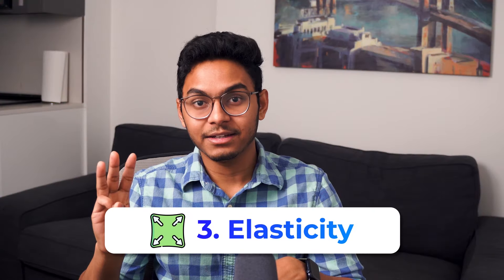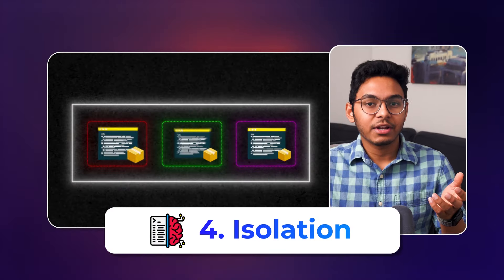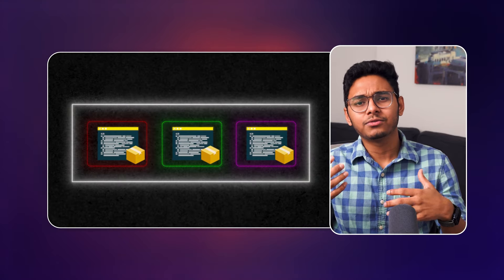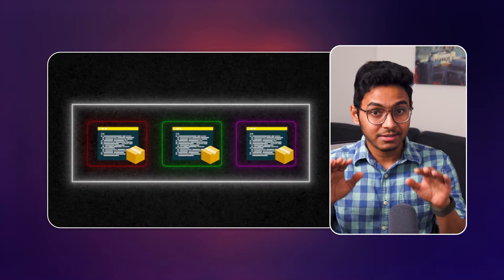The third is elasticity. Containers can be started, stopped, and replicated within seconds. This elasticity is crucial for scaling applications based on demand. The fourth is isolation. Containers running on a machine are isolated from each other. This isolation allows for running multiple containers simultaneously on the same host without conflicts. These containers could be running totally different applications with different sets of dependencies without any conflict.